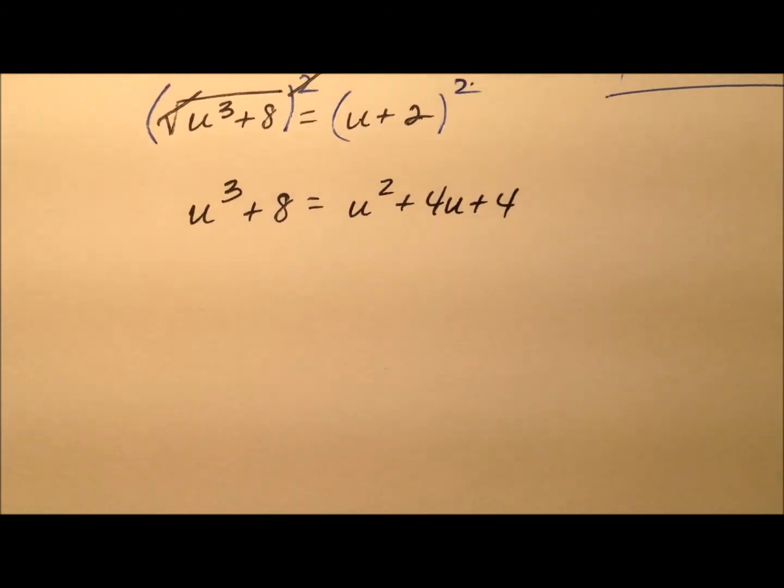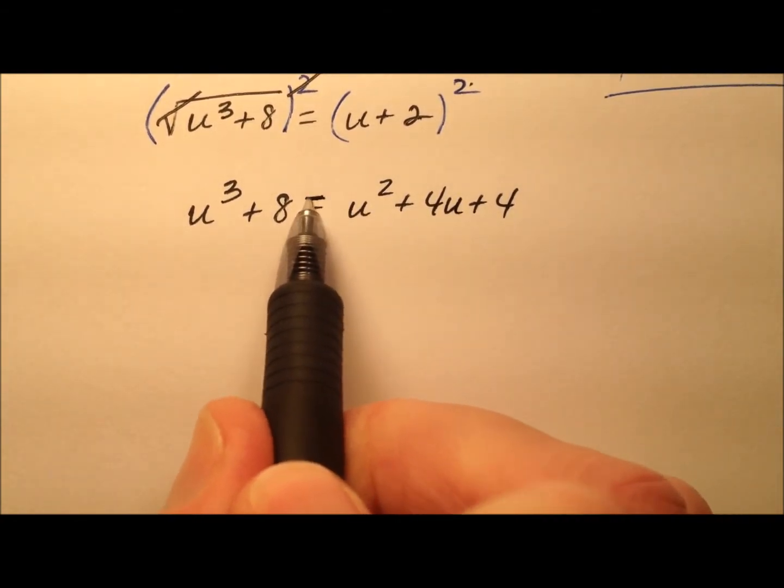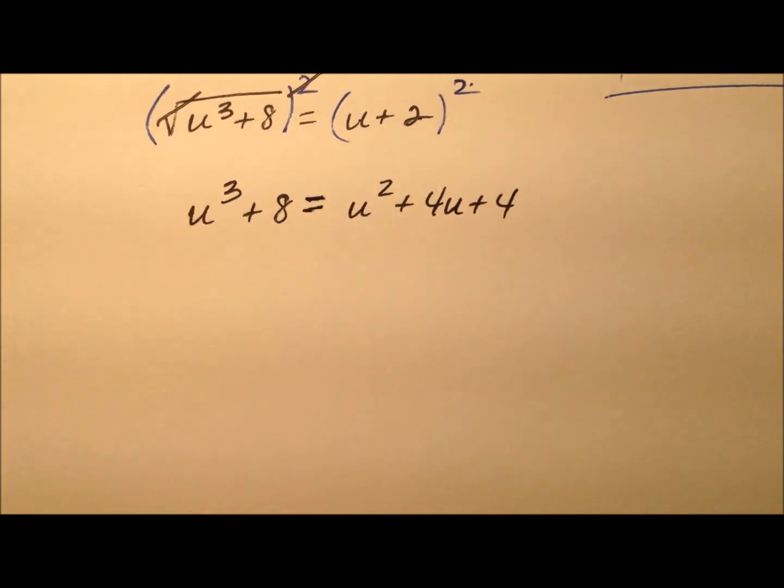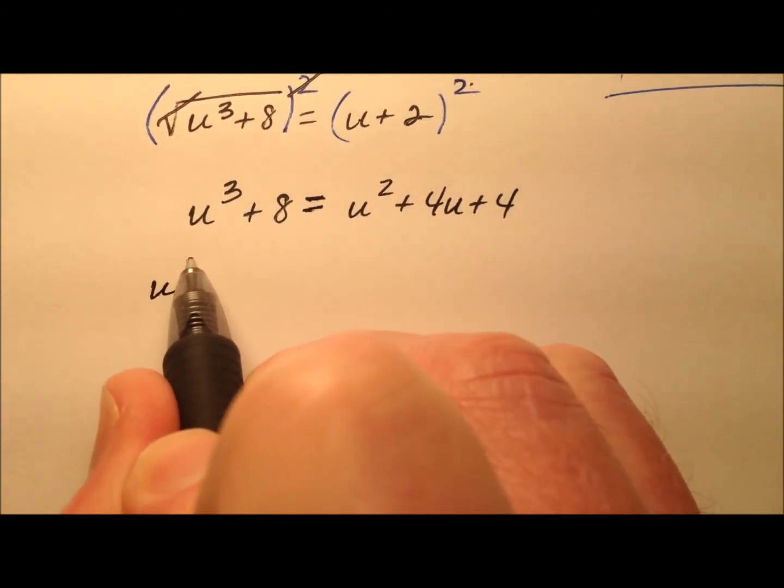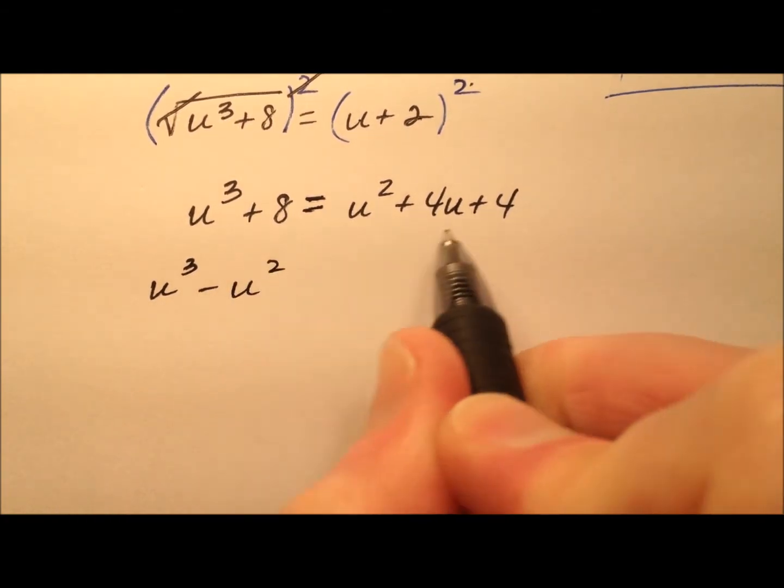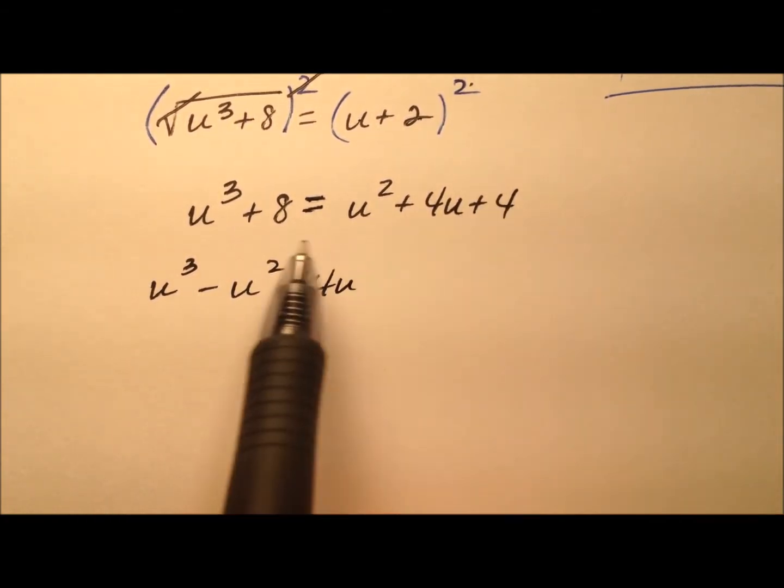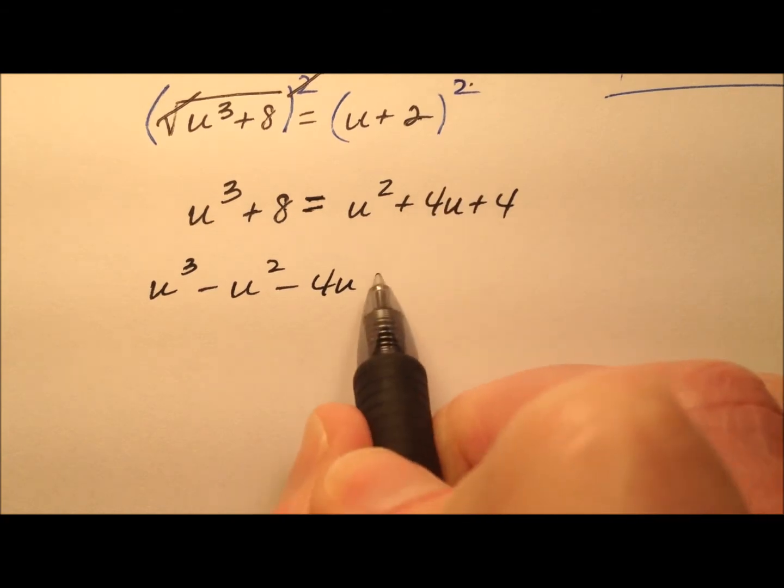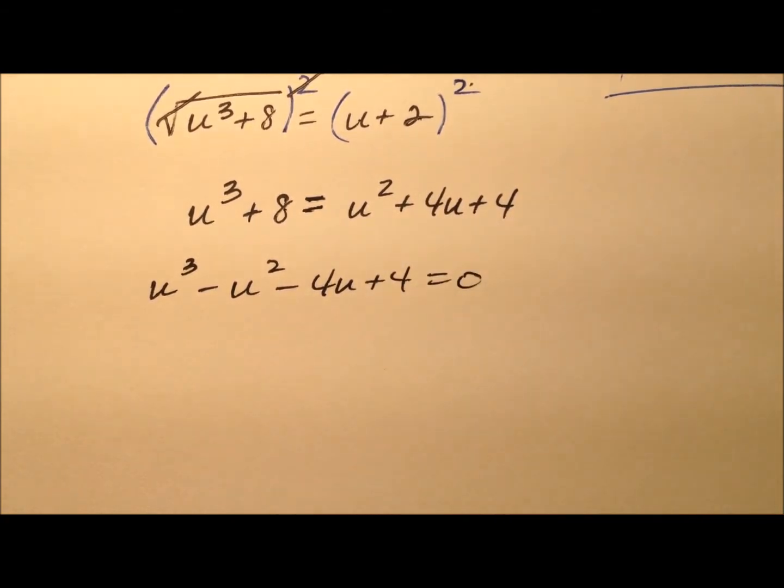And it looks like now we have a really nice polynomial equation, so let's go ahead and move all the terms to the left side of the equation, set that equal to 0. So u cubed minus u squared minus 4u, and then 8 minus 4 is plus 4 equals 0.